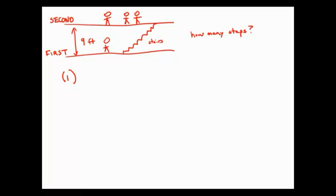Statement number one tells us that the height of each step is three quarters of a foot. Well, height is a vertical distance, and we have this vertical distance of nine feet. And so if we wanted to know how many heights fit in that nine feet, all we would do is nine divided by three quarters of a foot. And this would give us the number of stairs. And so this statement by itself would be sufficient to calculate the number of stairs.